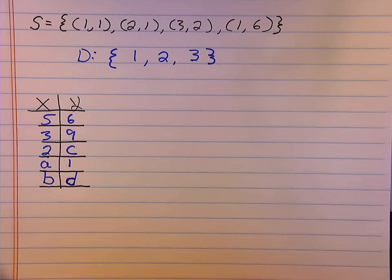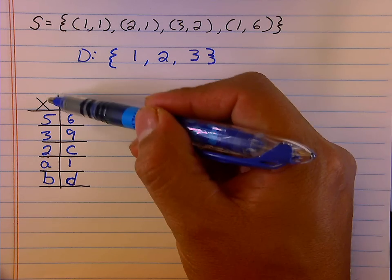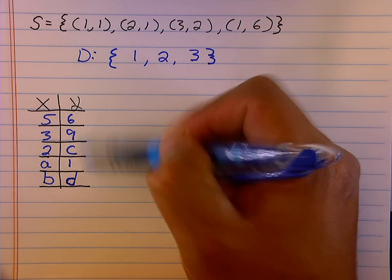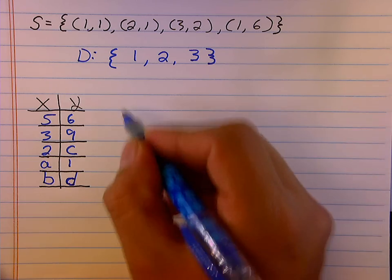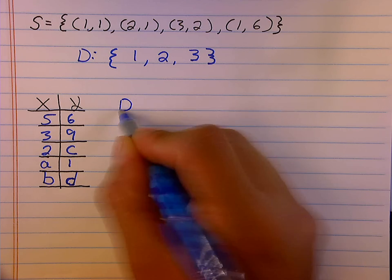Now we have a set of information written in table form. So I have both a set of input values and a set of y values. If I want to talk about my domain, I must describe all of the possible input values.